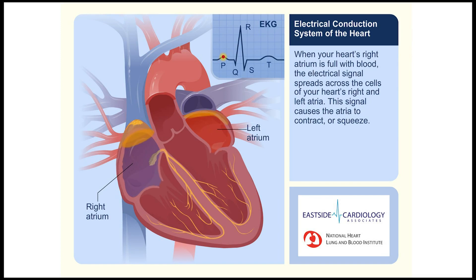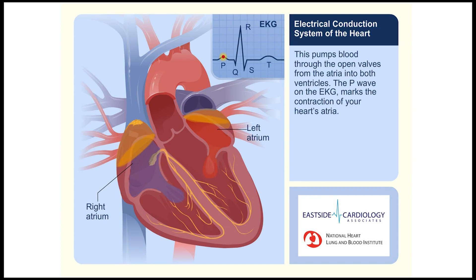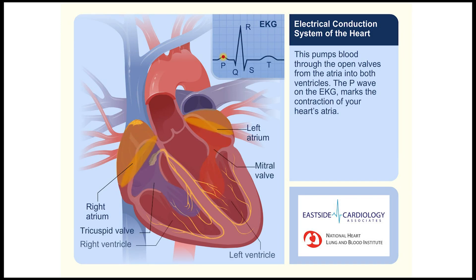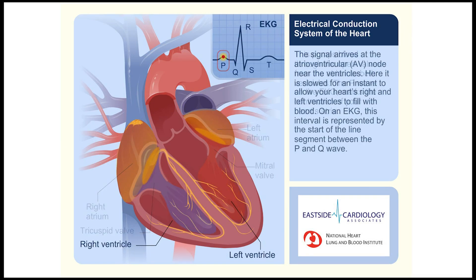This signal causes the atria to contract, or squeeze, pumping blood through the open valves from the atria into both ventricles. The P wave on the EKG marks the contraction of your heart's atria.